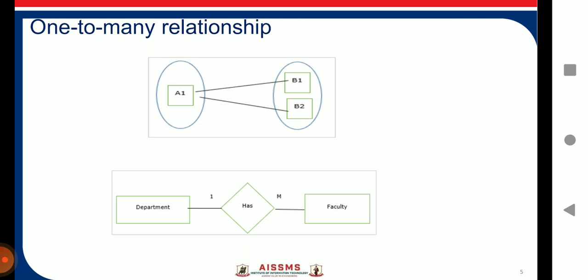In one-to-many cardinality mapping, an entity in A is associated with any number of entities in B, while an entity in B is connected to at most one entity in A. Examples include: one department has many faculties, or one department has many students. This is the one-to-many relationship.